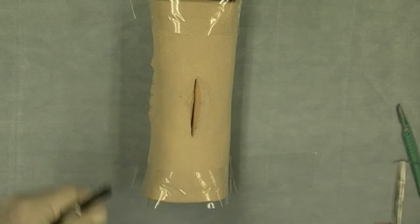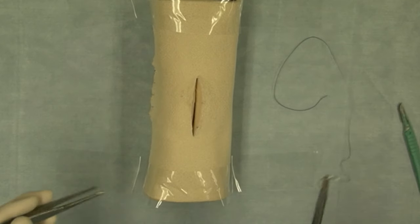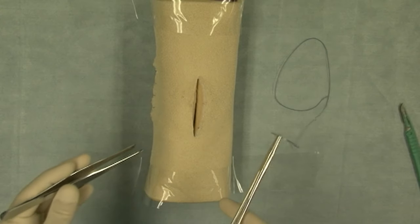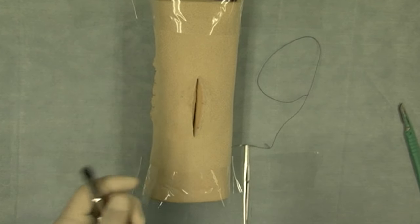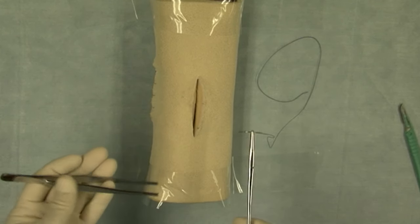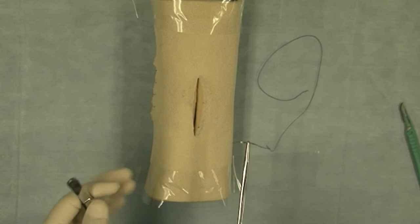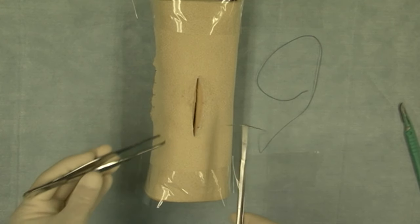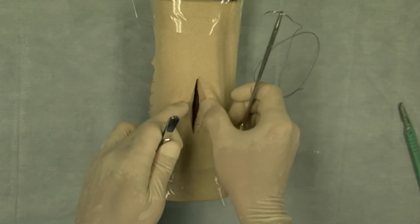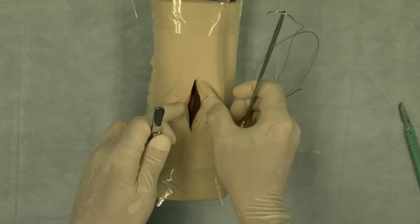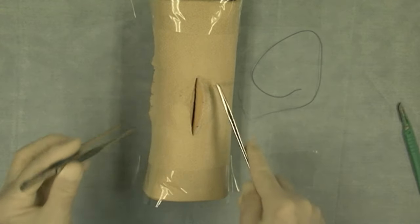I'm going to demonstrate the cruciate suture pattern, or what some call the cross mattress suture pattern. This is used generally under conditions of tension, primarily for skin closure. Notice that I'm using the skin portion of the daisy. You can see there's somewhat of a gap here; this is the skin portion.